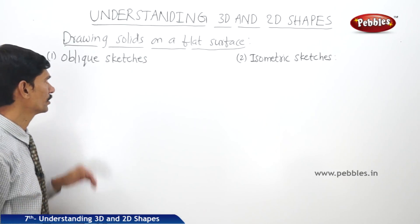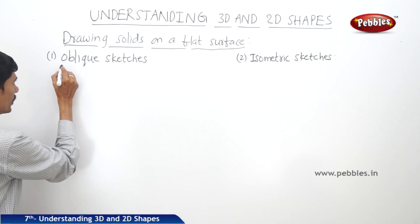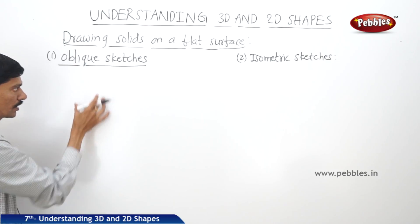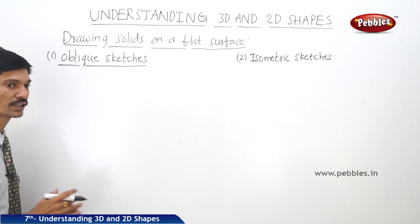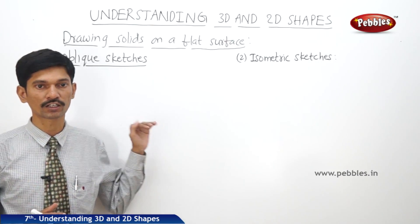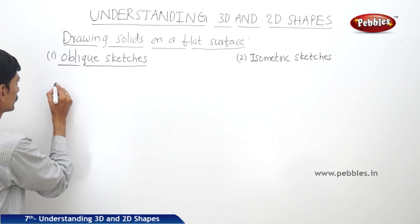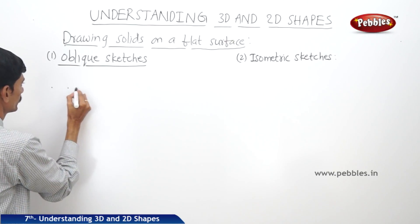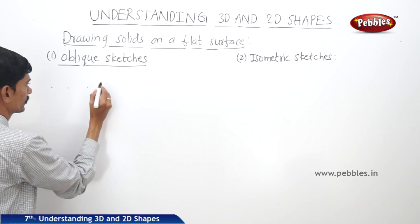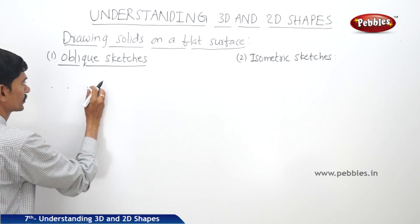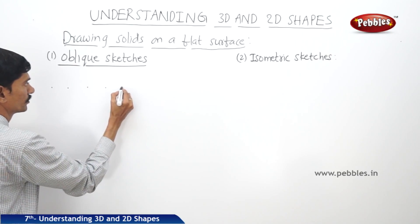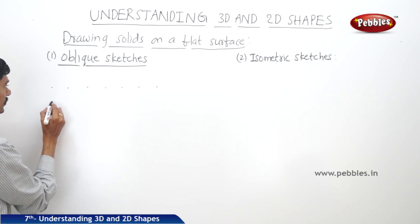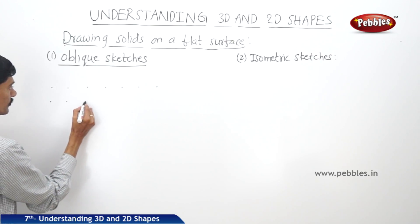First let us see what oblique sketches are. In the oblique sketch, we can take horizontal and vertical lines like on a graph sheet, or we can use dots with equal spacing between any two consecutive dots.